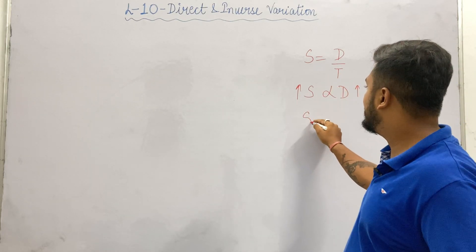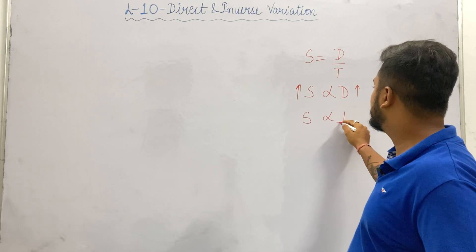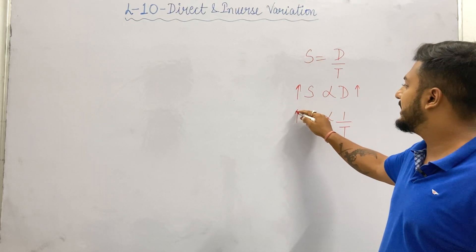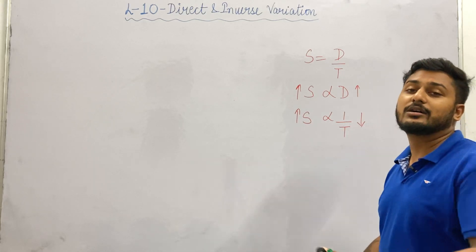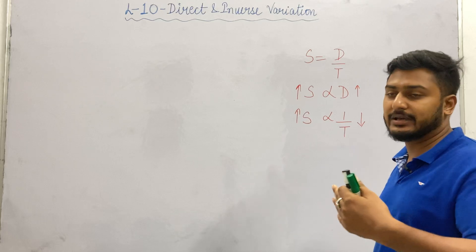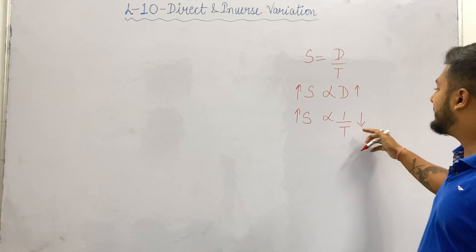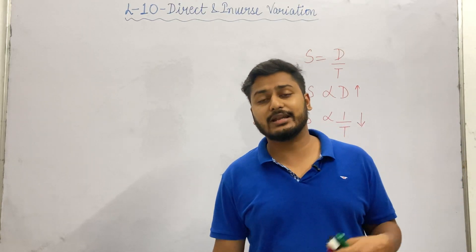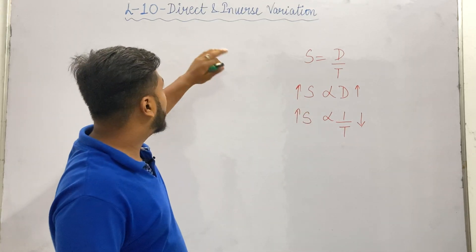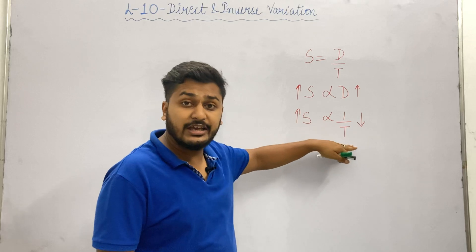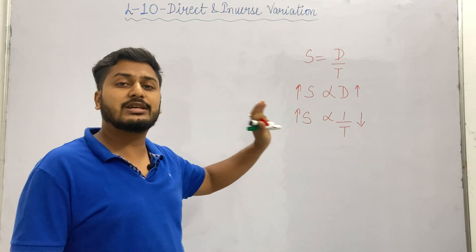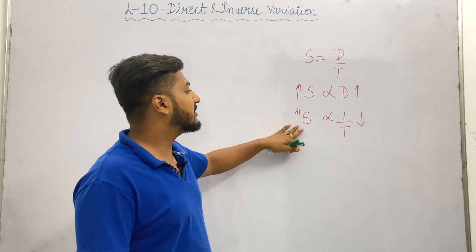And if we talk about speed and time, this is inversely proportional. Inversely proportional means if you increase speed, it will take less time to reach any goal. If your speed is more, you will travel the distance in less time. Or, if we increase time, it means your speed will automatically decrease. So this is reverse or inverse variation — when one thing increases, the other decreases, or when the other increases, the first one decreases.